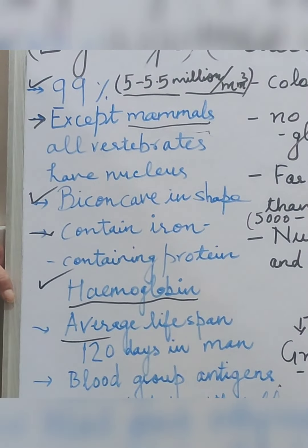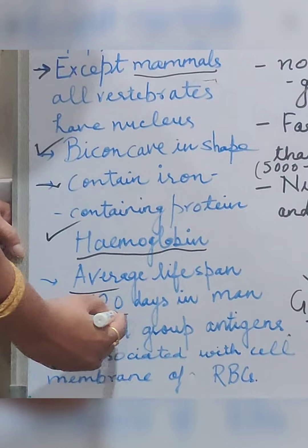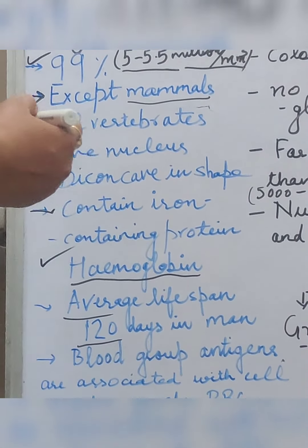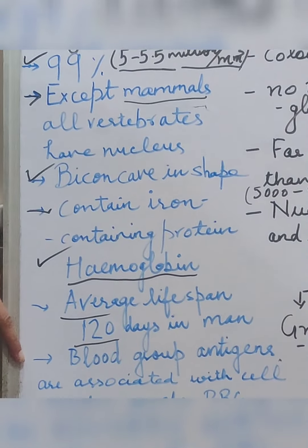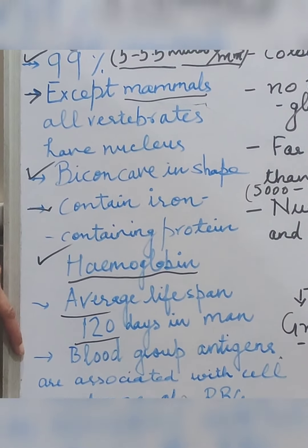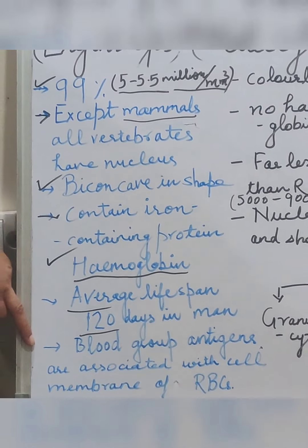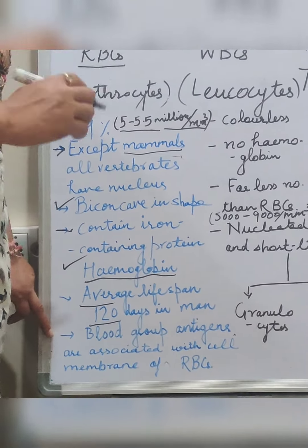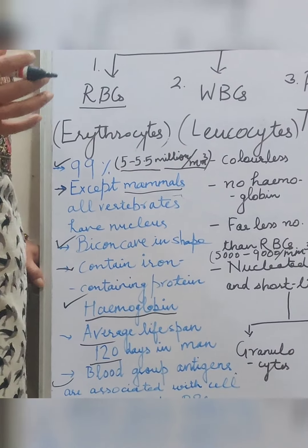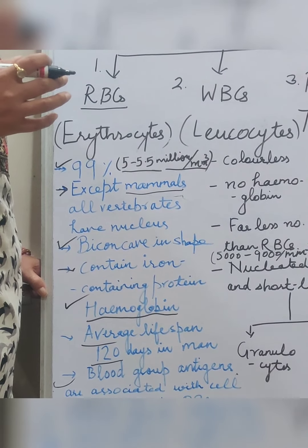When these cells mature, there is no nucleus. Their lifespan is 120 days in humans. Blood groups we have: A, B, AB, and O. All these blood groups are due to the presence of antigens in blood, and these antigens are associated with the cell membrane of red blood cells.